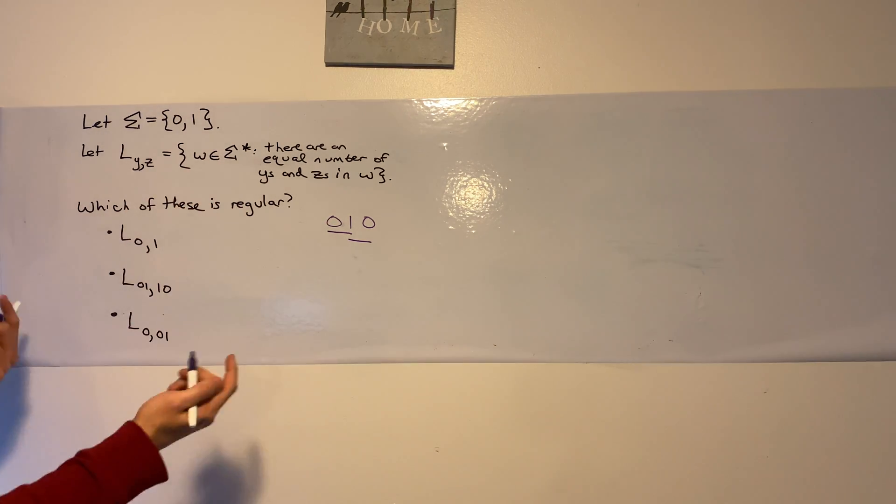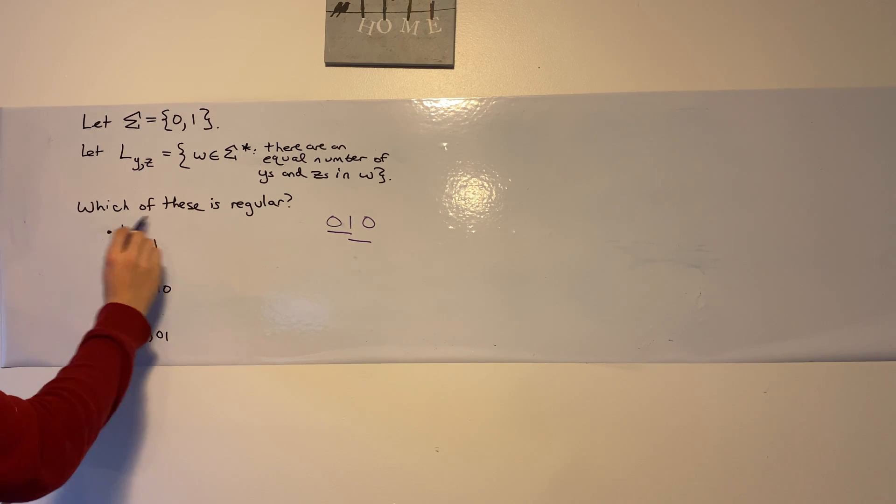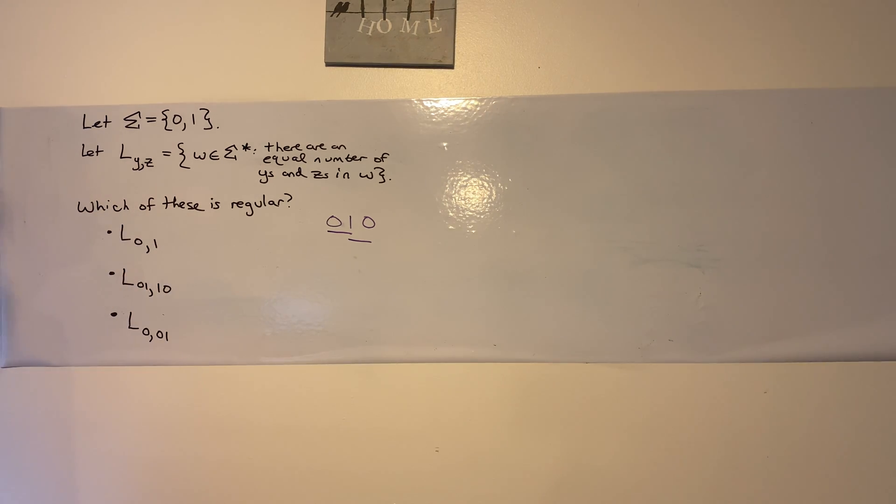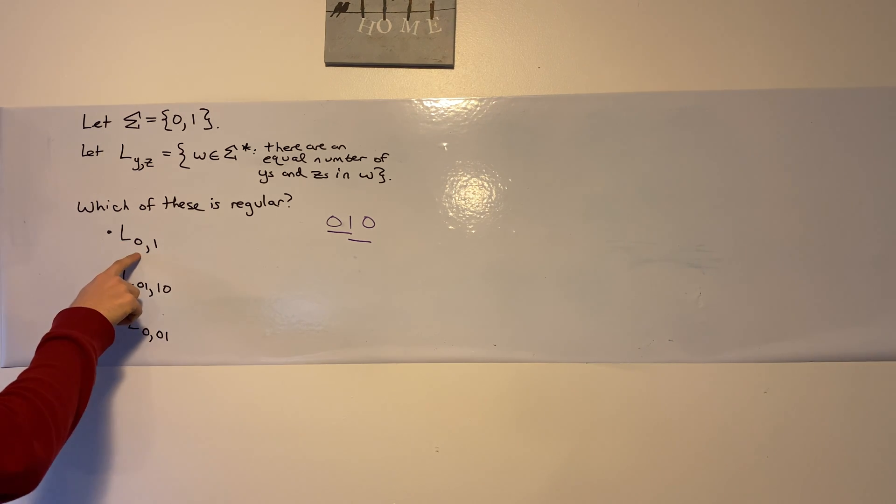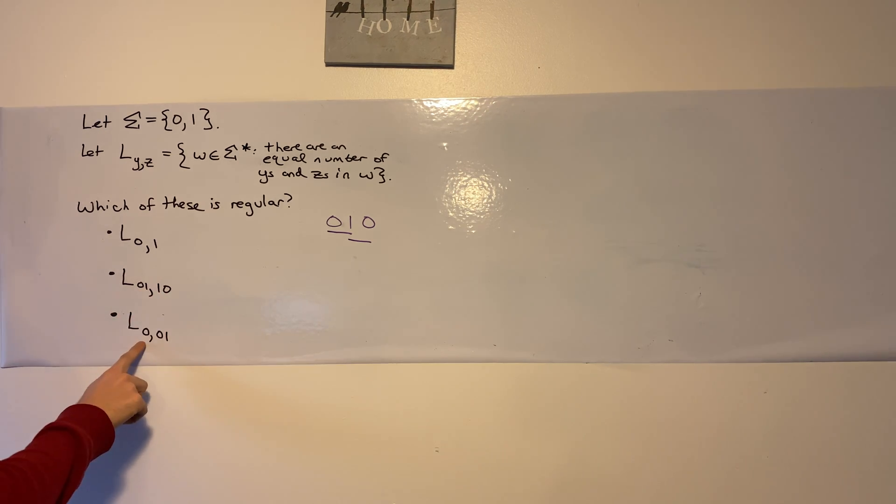So what I'm asking here is which of these three languages right here are regular. So I have L_0,1, so the same number of 0's and 1's, then the language of the same number of 0, 1's and 1, 0's, and finally the same number of 0's and 0, 1's.